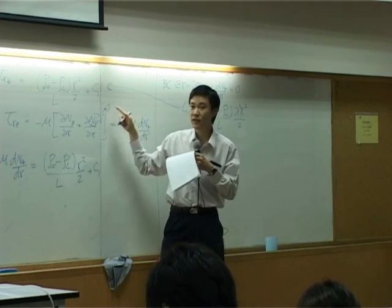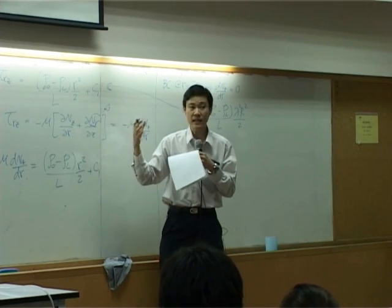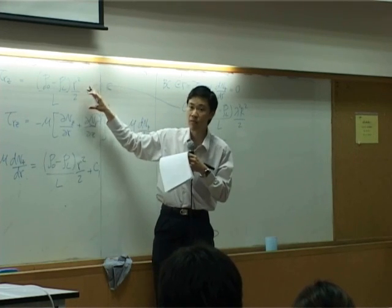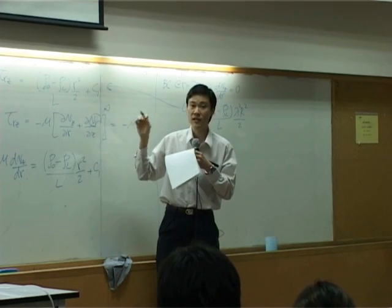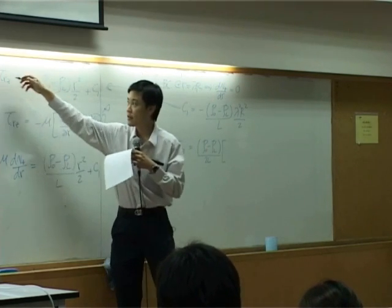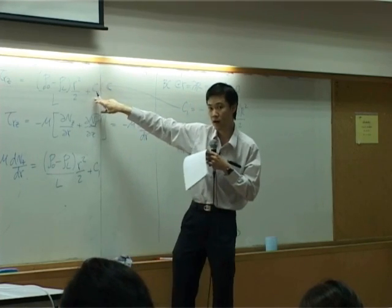We cannot do it in our last problem because our last problem include the position where r equal to 0. But in this problem, at r equal to 0, it's not in our system. So we can do that. So divide everything by r. This one turns to be r. This one is c1 over r.